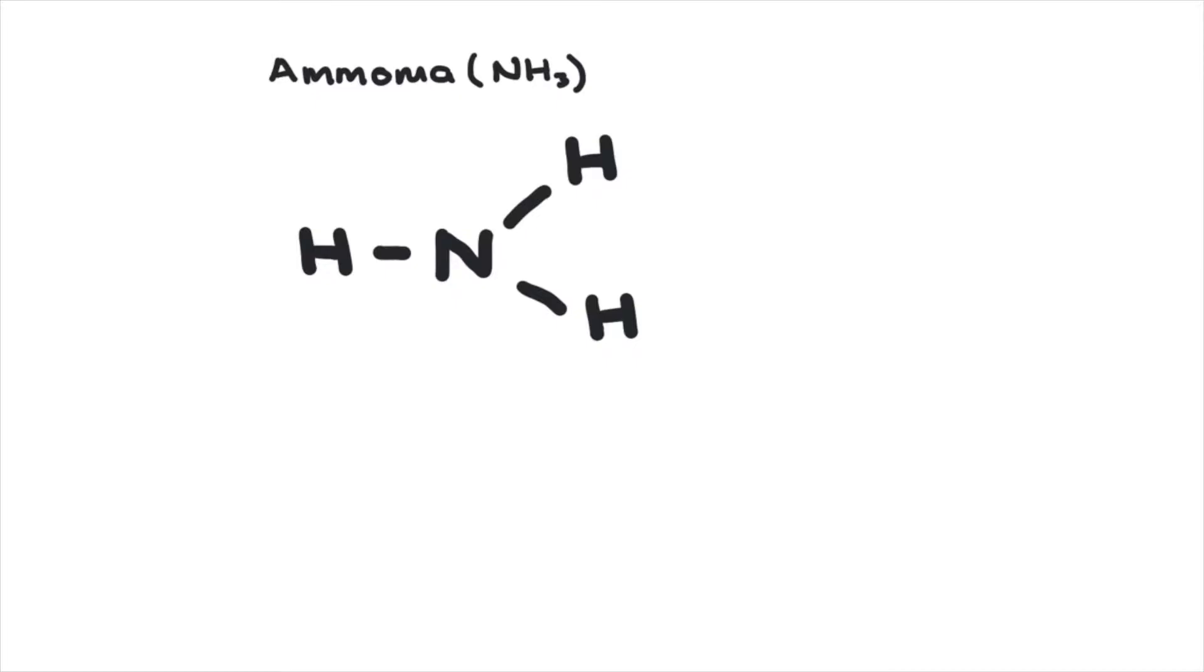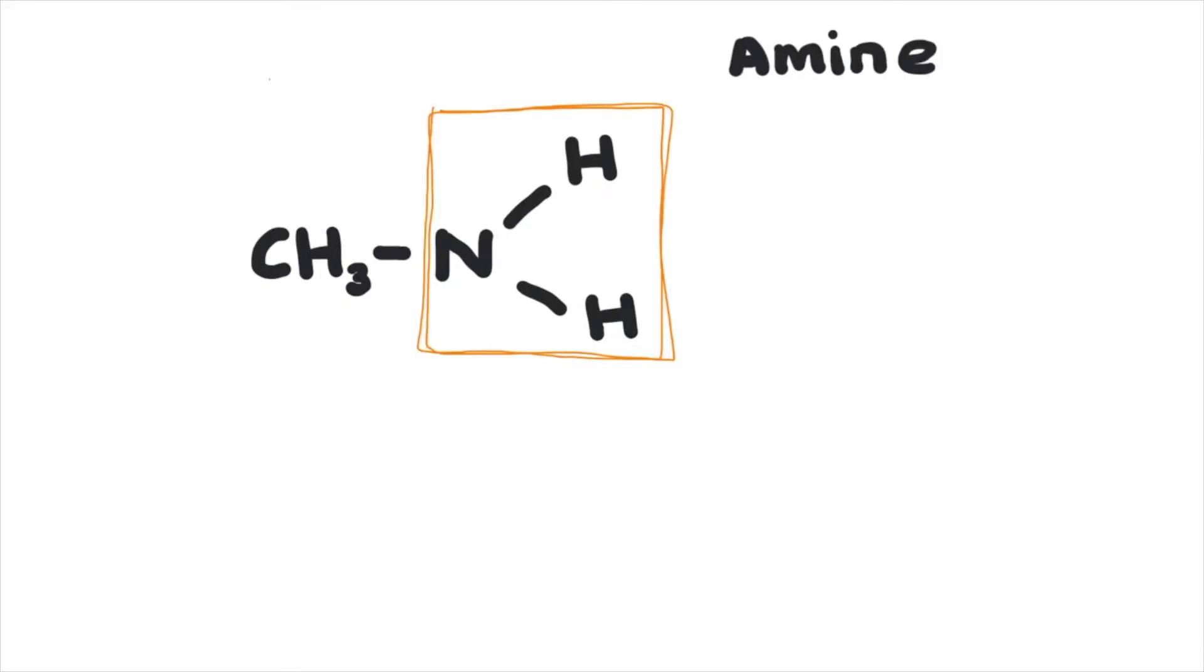If you take the ammonia molecule, get rid of one of the hydrogen and replace it with a carbon group like a methyl group, you have an amine. This is the amine functional group and these compounds are usually represented with this general formula, where R is the rest of the hydrocarbon chain.